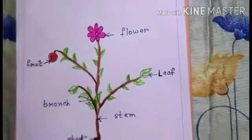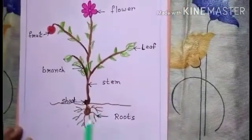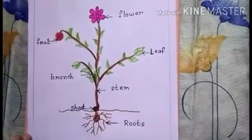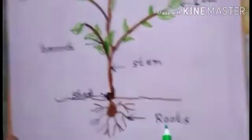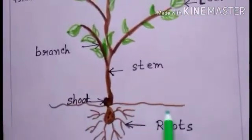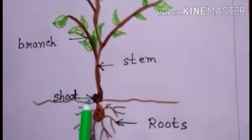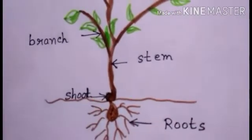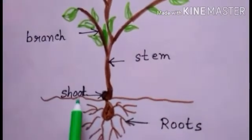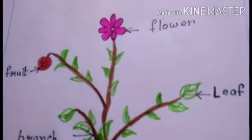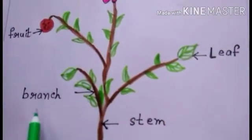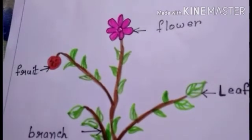The two important parts are root and shoot. Root grows under the ground. Shoot grows above the ground. The shoot has different parts: stem, leaf, branch, flower, and fruit.